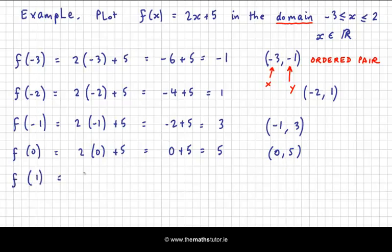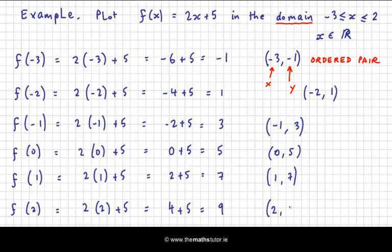f of 1 is 2 times 1 plus 5, which is 2 plus 5, which is 7. So 1 is mapped onto 7. And finally, f of 2, which is the last number in my domain. So 2 times 2 plus 5 means that we get 4 plus 5, which is 9. So when 2 is substituted in, we get 9.